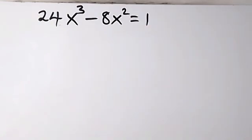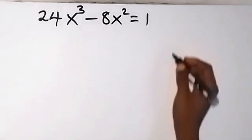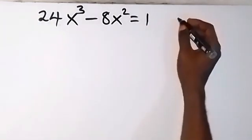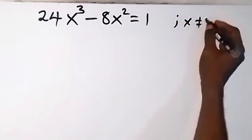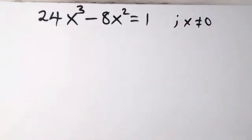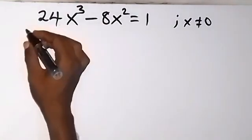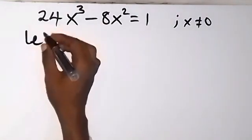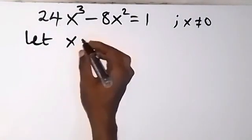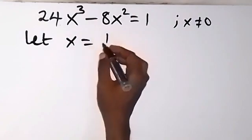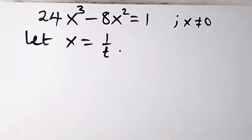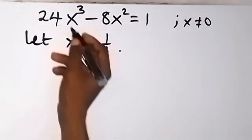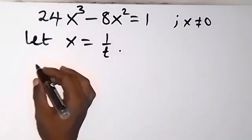From this question it is obvious that the value of x cannot be equal to zero. So our x cannot be equal to zero. Let's represent x as x equals 1 over t. Then replace x with 1 over t.